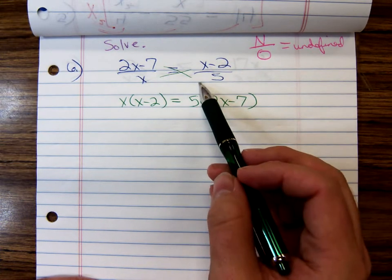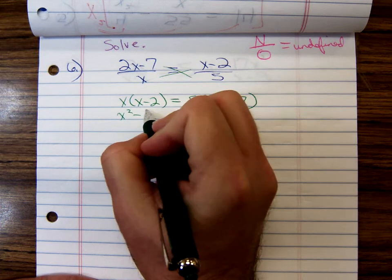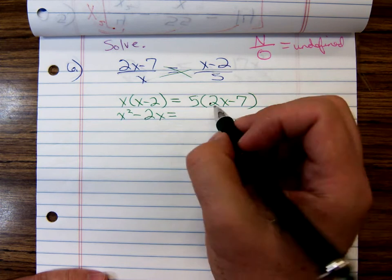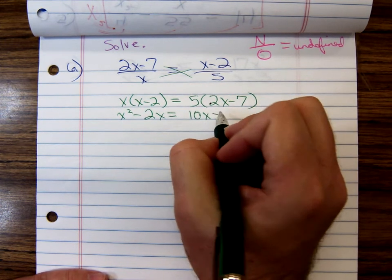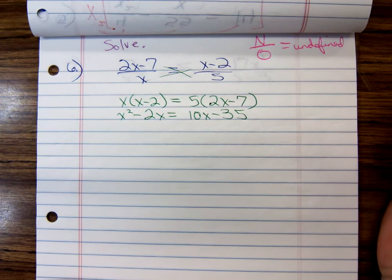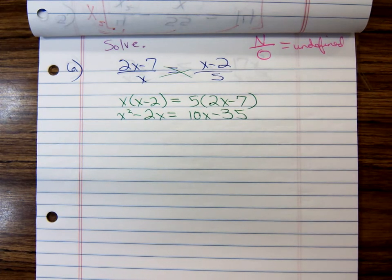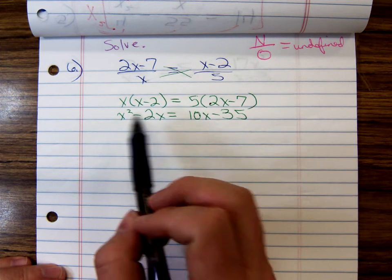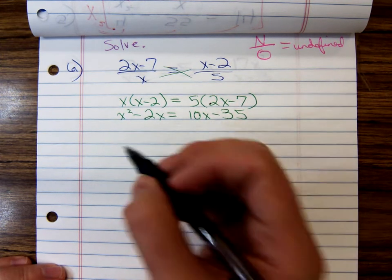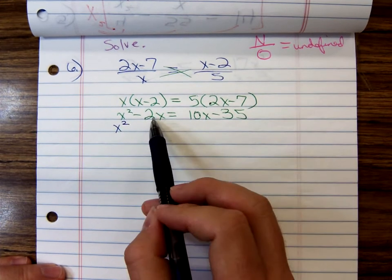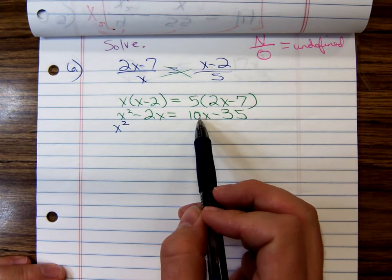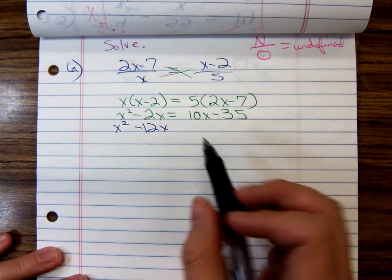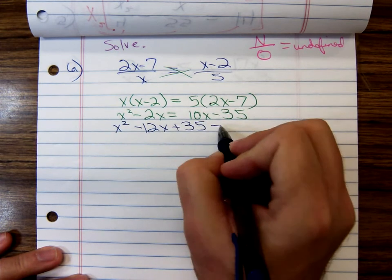Cross-multiplying, that gives us x squared minus 2x equals 10x minus 35, and this is quadratic. I'd have to set this equal to 0, and I want the leading coefficient to be positive, so I'd get the 0 on the right-hand side. That gives me x squared. We have a negative 2x minus 10x, that's a minus 12x. Move the 35 over the left, give me a plus 35 equals 0.